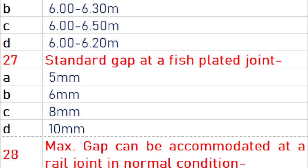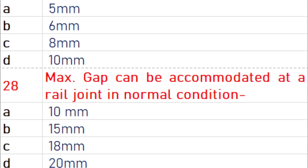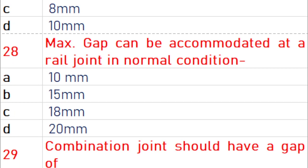A standard gap at a fish-plated joint is 6 mm. The maximum gap that can be accommodated at a rail joint in normal condition is 5 mm.